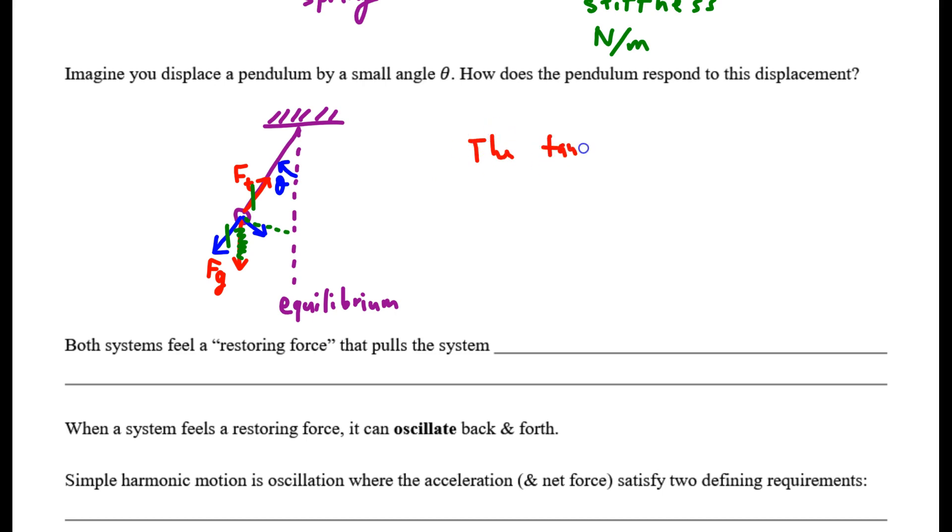And that component right there is a net restoring force. The tangential component of gravity pulls the pendulum back to equilibrium. That's what this bullet says: both systems feel a restoring force that pulls the system back to the equilibrium position.